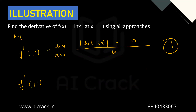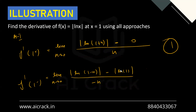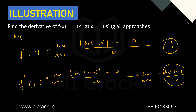Now for f'(1−): limit h→0 of [|ln(1−h)| − |ln 1|] / (−h). Since 1−h < 1, ln(1−h) is negative, so the modulus opens as −ln(1−h). This gives limit h→0 of [−ln(1−h)] / (−h) = limit of ln(1−h)/(−h), which equals 1, so f'(1−) = −1. Since RHD = 1 and LHD = −1, they are not equal, so the derivative does not exist for |ln x| at x = 1.